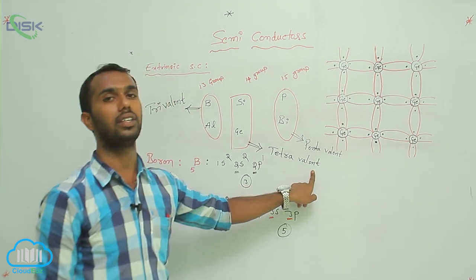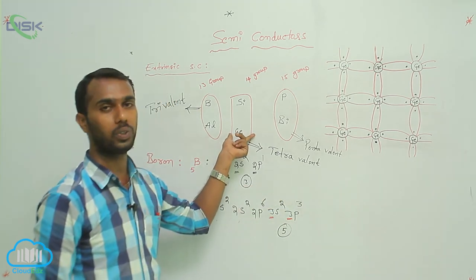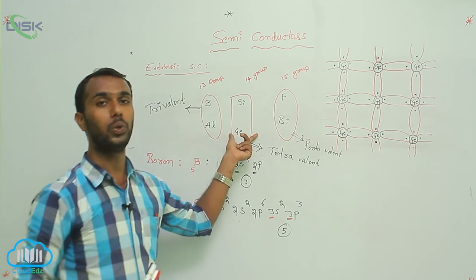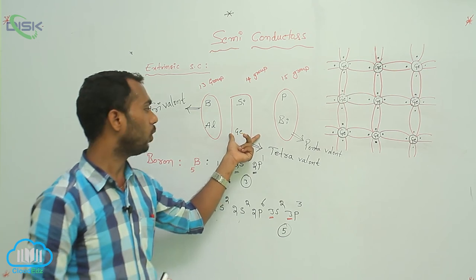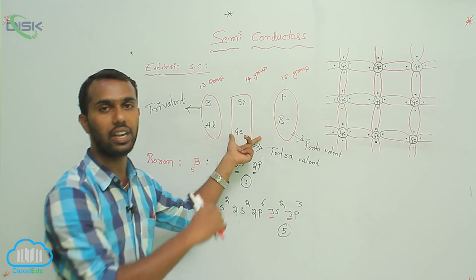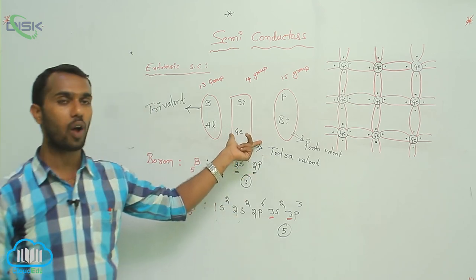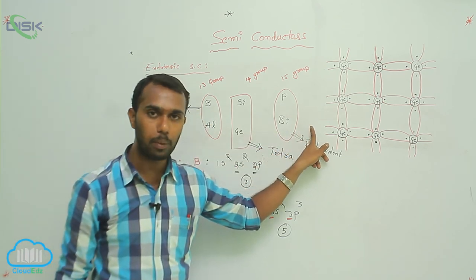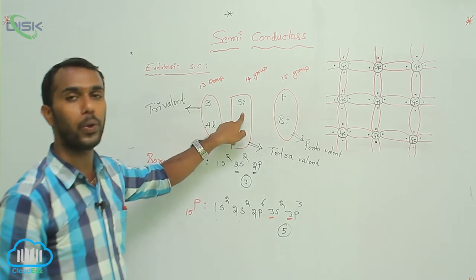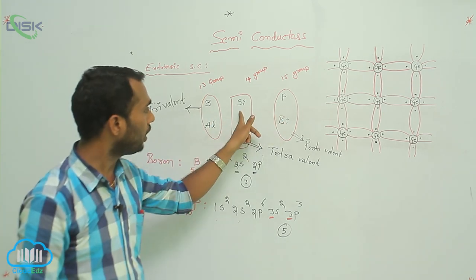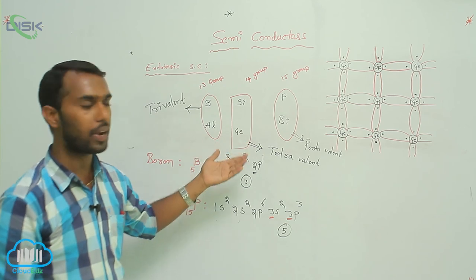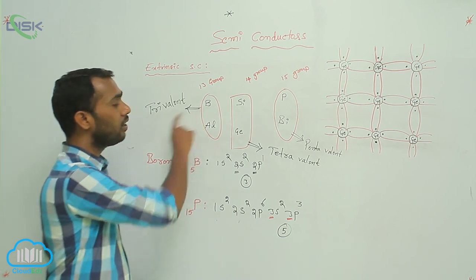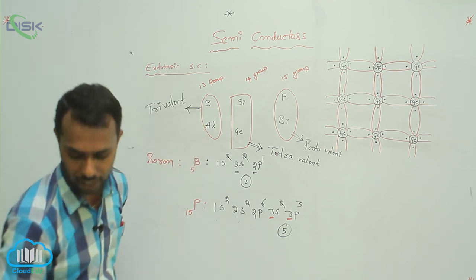So silicon and germanium are tetravalent semiconductors. To these, we add impurities through the doping process to increase conduction. We can add either trivalent impurities or pentavalent impurities. Now let's check what happens when we add trivalent impurities and what happens when we add pentavalent impurities.